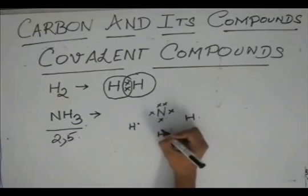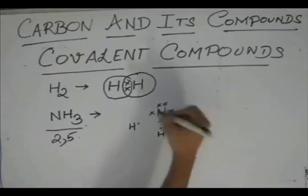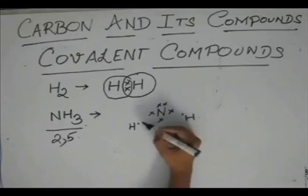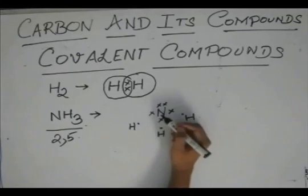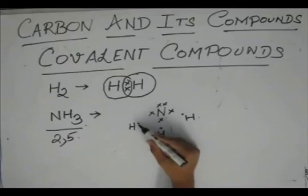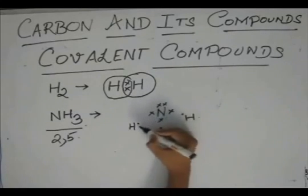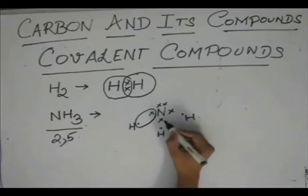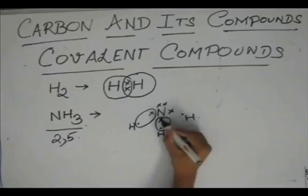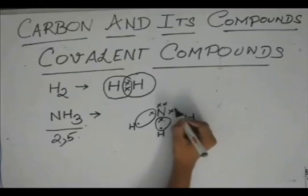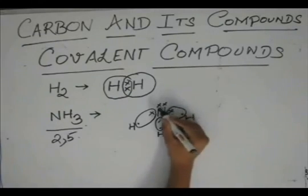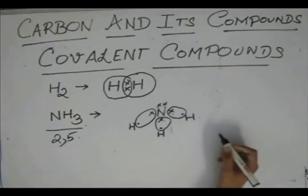So, each hydrogen will share one electron with nitrogen. I am representing these electrons of hydrogen with dots since they are electrons of a different element. So, this and this is shared, and this and this is shared, and this and this is shared. These two electrons remain unshared.